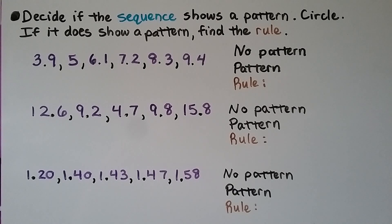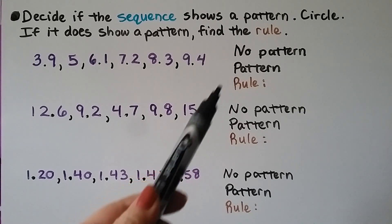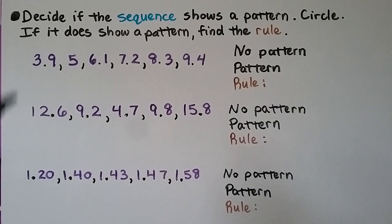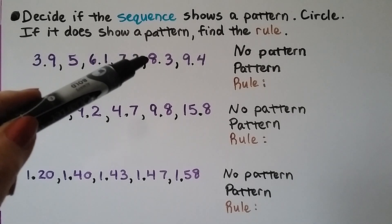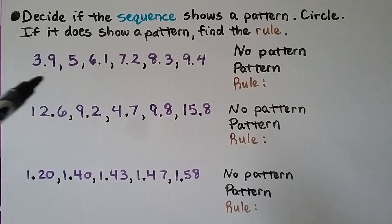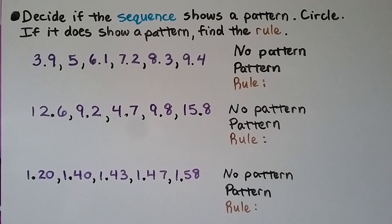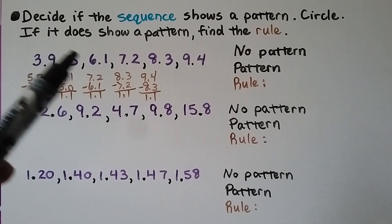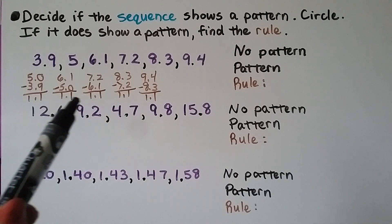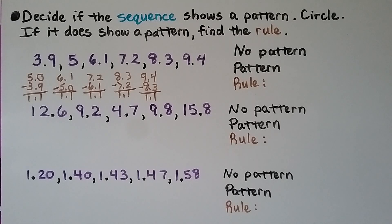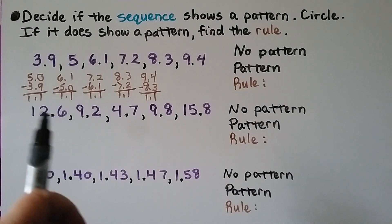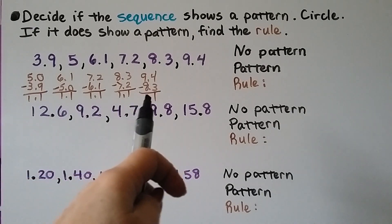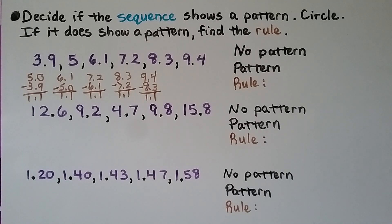We need to decide if a sequence shows a pattern, then circle 'no pattern' or 'pattern,' and if there is one, write the rule. The sequence goes: 3 and 9 tenths, 5, 6 and 1 tenth, 7 and 2 tenths, 8 and 3 tenths, 9 and 4 tenths — it is increasing. We find the difference between each pair of terms and see they all have a difference of 1 and 1 tenth. So the rule is add 1 and 1 tenth, and there is a pattern because all differences are equal.